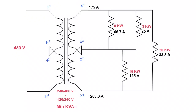While we're at it, let's determine what the neutral current is — it's not really necessary, but it's a good habit to get into. If I have 208.3 amps on one line but 175 amps on the other, that means 208.3 is traveling along and suddenly becomes 175. The difference went along the neutral: 208.3 minus 175 gives you 33.3 amps on the neutral.